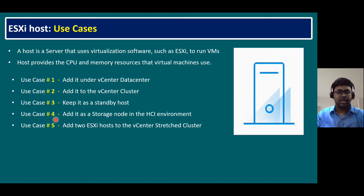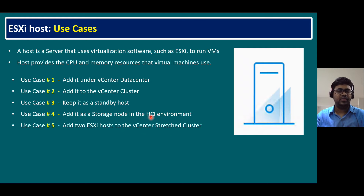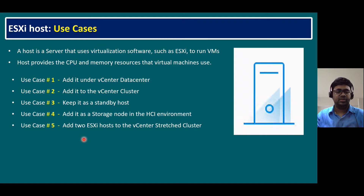Use case four: add it as a storage node in an HCI — Hyper-Converged Infrastructure — environment. In HCI, storage comes from the ESXi host nodes themselves, with no external storage arrays. We can use our ESXi host also as a storage node. When data stores are running at over 80 or 90 percent usage, we use this scenario. The procedure to add the host to vCenter is the same, but the local hard disks of the ESXi host are used as storage for HCI clusters.